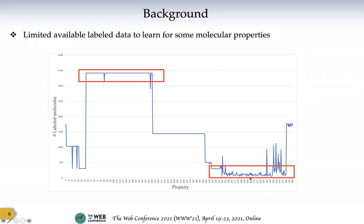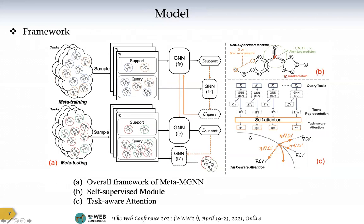So what we want to do is to design a model which can learn well even when some properties only have few examples. Our model takes molecular graphs as input. The overall framework is named MetaMGN. To improve the effectiveness of our model, we also design two parts: one is a self-supervised module applied on the graph neural network, and another is task-aware attention. I will introduce these one by one.